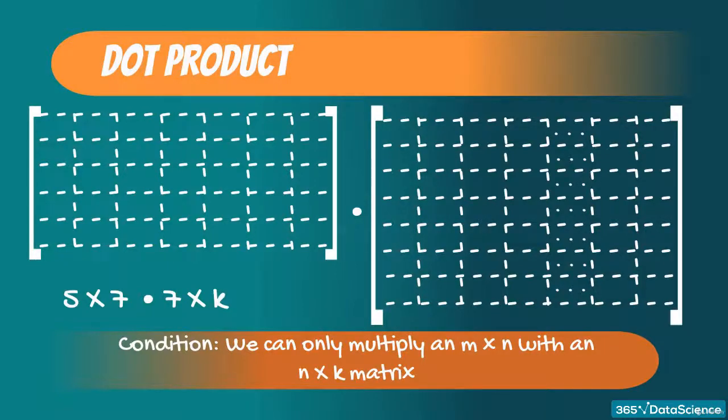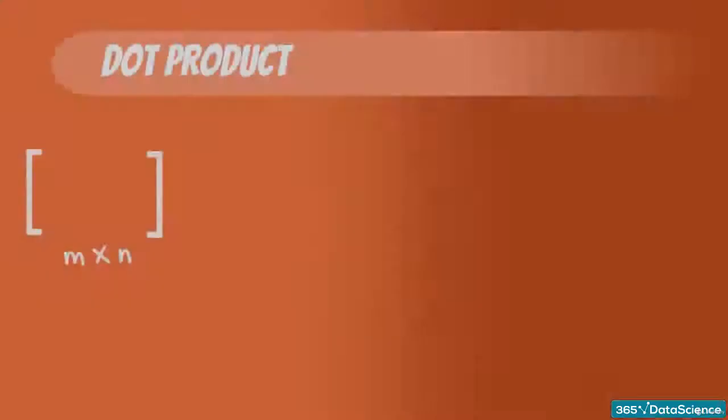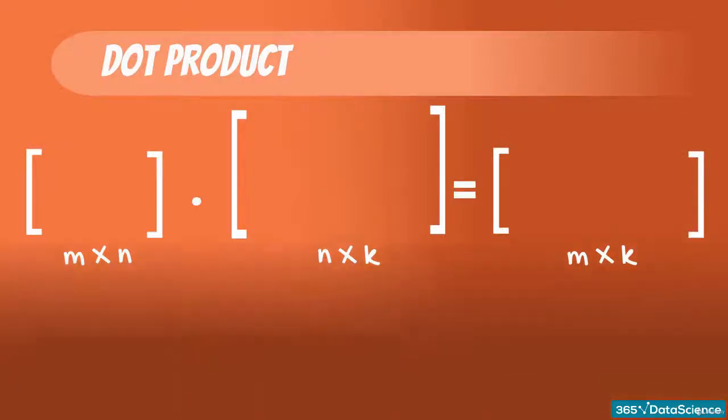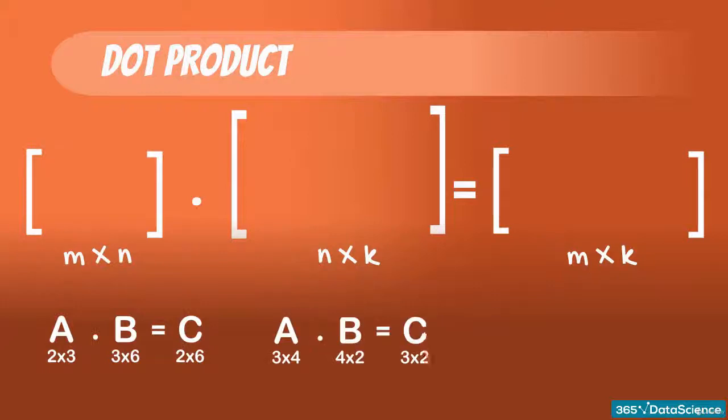What about the dimensions of the product itself? When multiplying an m by n matrix with an n by k matrix, the output is an m by k matrix. For instance, a 2 by 3 matrix times a 3 by 6 matrix will give us a 2 by 6 matrix. A 3 by 4 matrix times a 4 by 2 matrix will give us a 3 by 2 matrix. A 100 by 300 matrix times 300 by 3 matrix will result in a 100 by 3 matrix. Basically, whichever dimension is repeating will disappear in the resulting matrix.